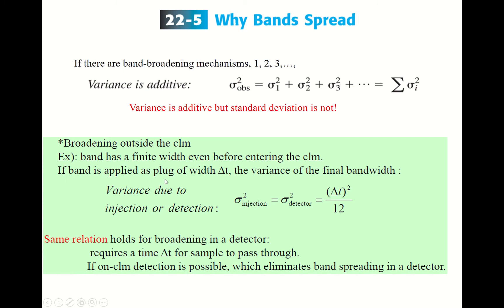If the band is applied as a plug with delta t — and this delta t is not zero, it has a certain value — the variance of the final band width is given by delta t squared divided by 12. This variance due to injection can be equated to the variance of the detector as well. The same relation holds for broadening in a detector: it requires time delta t for the sample to pass through.